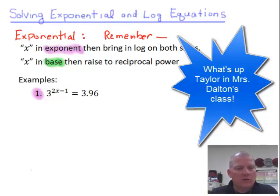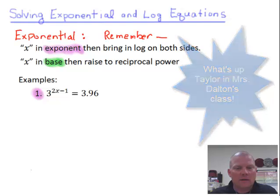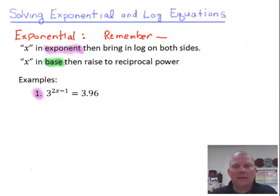Where it has 3 raised to the 2x minus 1, and that's going to be equal to 3.96. In this problem, the x is in the exponent. So we're going to bring in the log on both sides. And why do we do this? Well, anytime we solve equations, we just use inverse operations. And if you'll remember from the very first lesson in this unit that logarithm is the inverse of exponents.